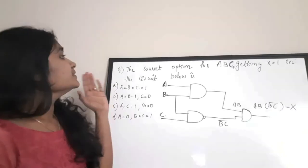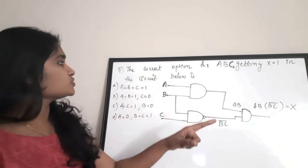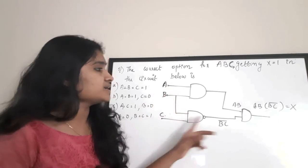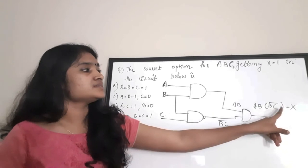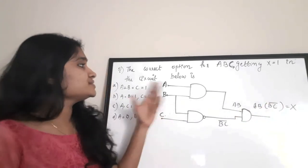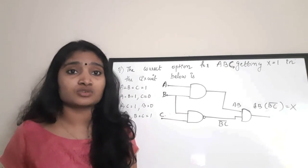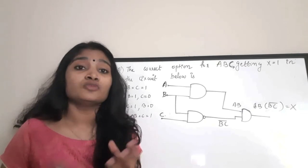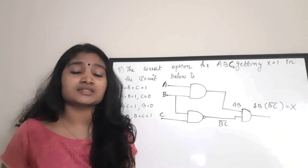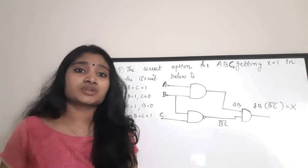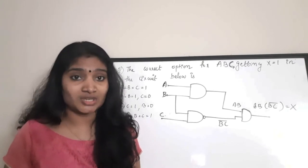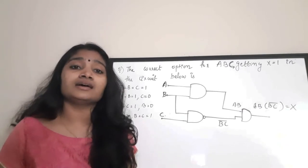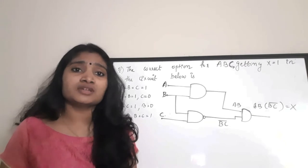This is a digital electronics question from logic gates. There are three inputs and an output X, where X = AB · (BC)̄. This is a basic question — if you know boolean simplification, you can answer it. If you're preparing for the SDSC Technical Assistant exam, you can expect questions from core subjects of electronics at a moderate difficulty level.